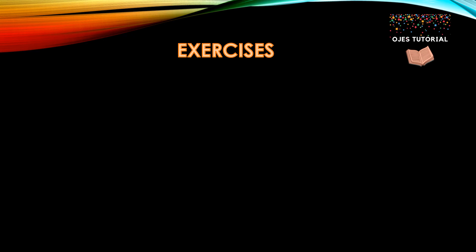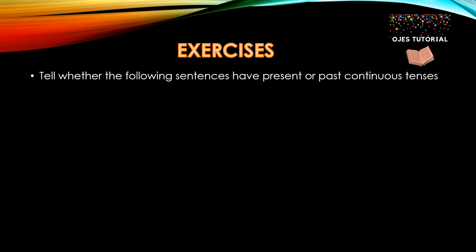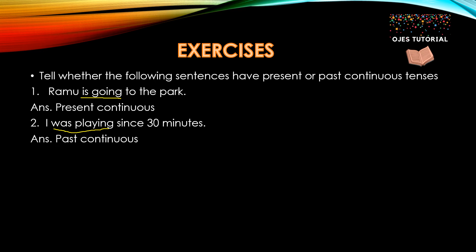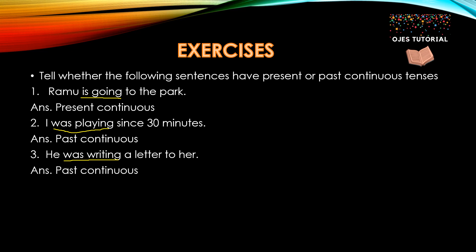Now, let's start with the exercises. Tell whether the following sentences have present or past continuous tenses. Ramu is going to the park — here is going is the tense, and it is in the present continuous tense. I was playing since 30 minutes — was playing is in the past continuous tense. He was writing a letter to her — was writing is in the past continuous tense.